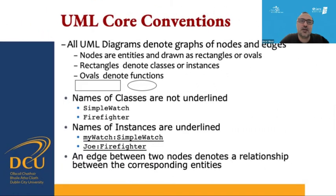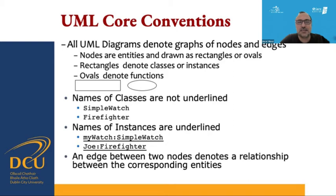There is a standard UML core convention we can look at. UML diagrams denote graphs of nodes and edges. Nodes are entities drawn as rectangles — functional requirements can be written in ovals. Rectangles most often denote classes or interfaces. Names of classes are not normally underlined, but instances, if you see any diagram with an underlined form, usually means it is an instance. An edge between two nodes denotes the relationship between the corresponding entities.